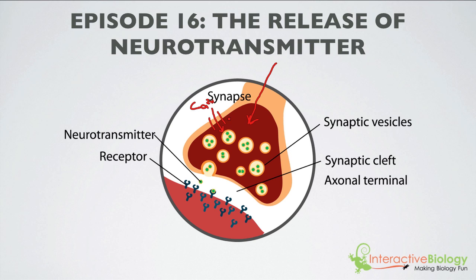This is a very important event because it causes something very significant. It causes these synaptic vesicles to fuse with the pre-synaptic membrane. And you can see an example of that happening right here. When the synaptic vesicle fuses with the pre-synaptic membrane, that causes the neurotransmitter to be released into the synaptic cleft. You can see an example of a neurotransmitter that is released right here, and there's another one right here.